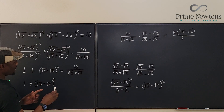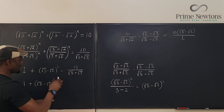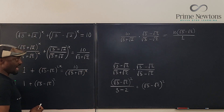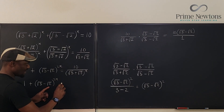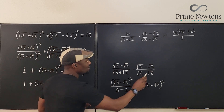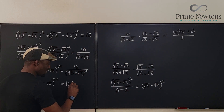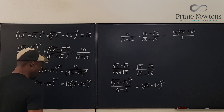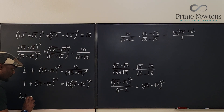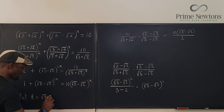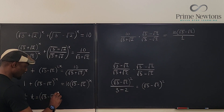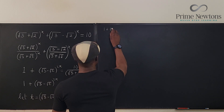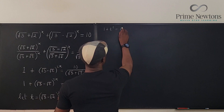Wait — this is actually raised to power x. So the expression is (√3 − √2) raised to power x. This should be equal to 10 times (√3 − √2) raised to power x. We can make a quadratic out of this: let t = (√3 − √2)^x, so we have 1 + t squared equals 10t.